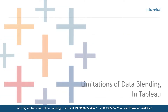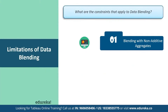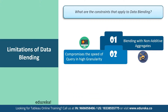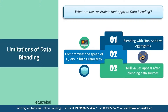Now let's talk about the limitations of data blending. First, blending with non-additive aggregates: there are some blending limitations around non-additive aggregates such as COUNT DISTINCT, MEDIAN, and raw SQL aggregates. When you blend on a field with a high level of granularity — for example, date instead of year — queries can be slowed down and query speed is compromised. Second, null values can sometimes appear in place of the data you want in the view when using data blending. This can happen because the secondary data source does not contain values corresponding to the primary data source, the data types of the fields being blended are at different levels of detail, or the values in the primary and secondary data sources use different casing.